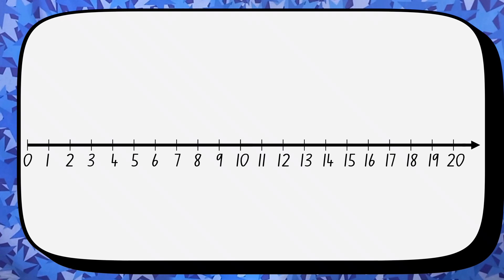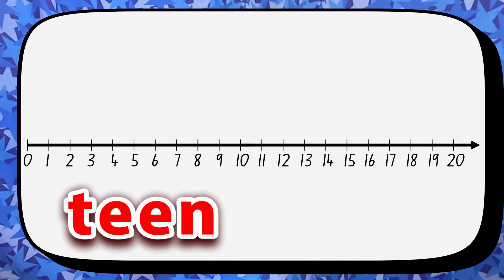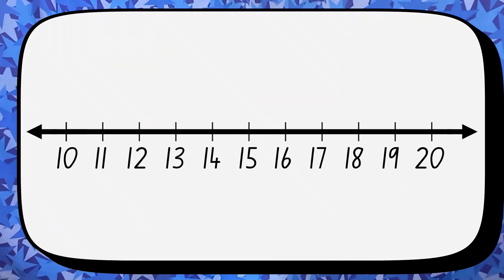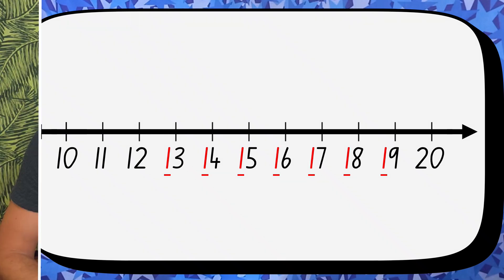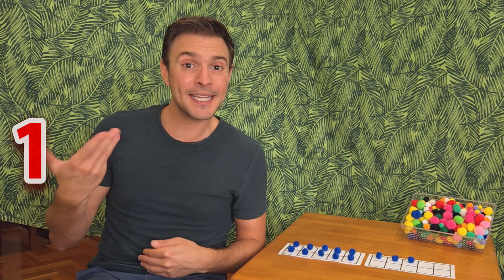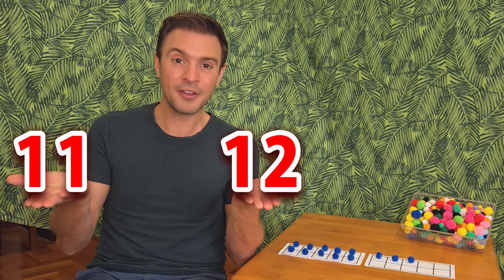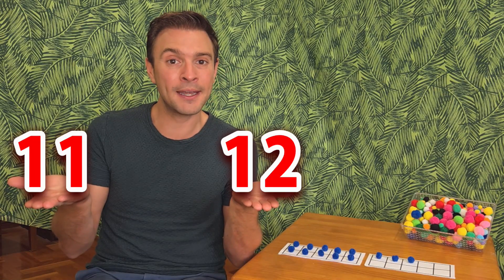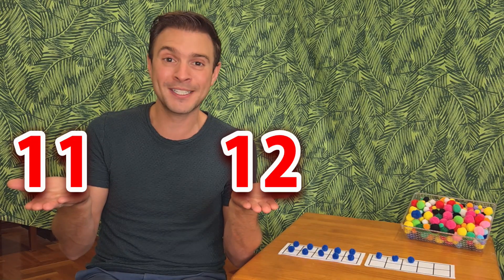So now we know the teen numbers from 13 to 19. We can hear the teen, which is a clue that there is a group of 10 in the number. And we can see that all the teen numbers start with a 1. But can you see some other numbers that start with a 1? Did you notice the numbers 11 and 12? Yes, 11 and 12 also have a group of 10, but they don't have the word teen in their name.